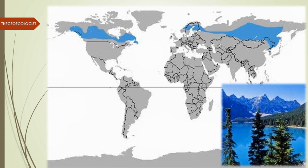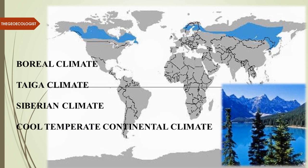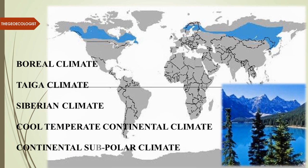Let's understand the various names given to this particular biome. The first name is boreal climate or boreal forests. Then the other name is taiga climate, followed by Siberian climate, cool temperate continental climate, and continental subpolar climate. There are several names given to the climatic regime of this biome, and whenever we hear any of these, they all mean the same thing.